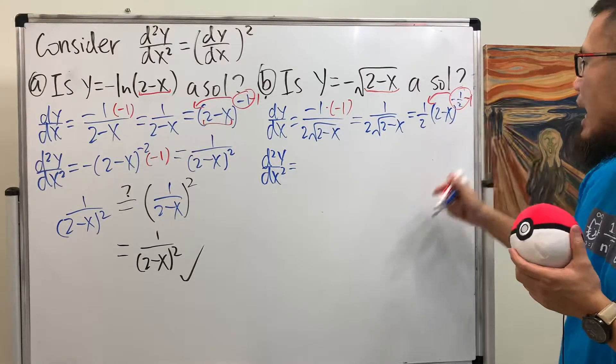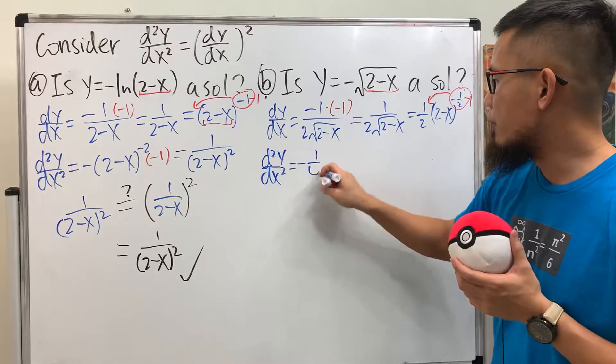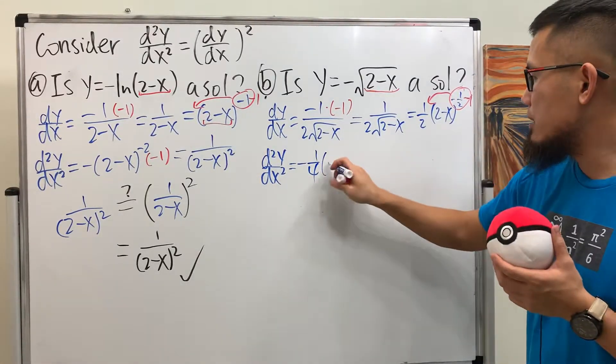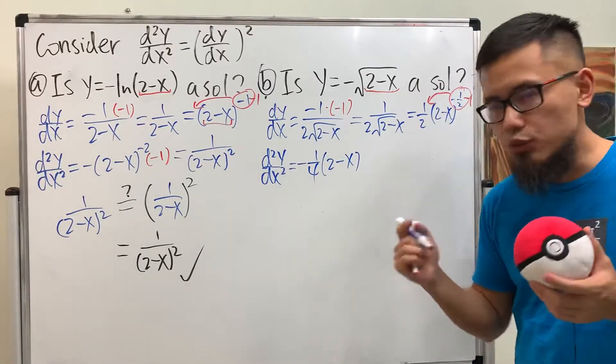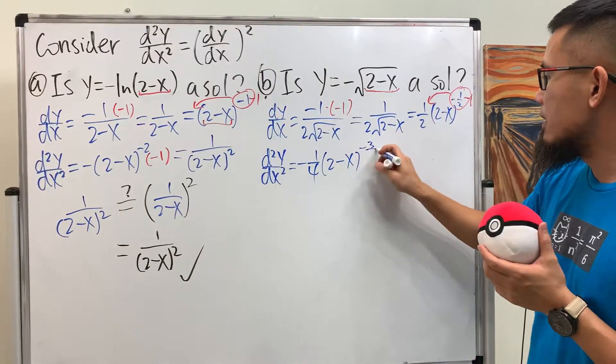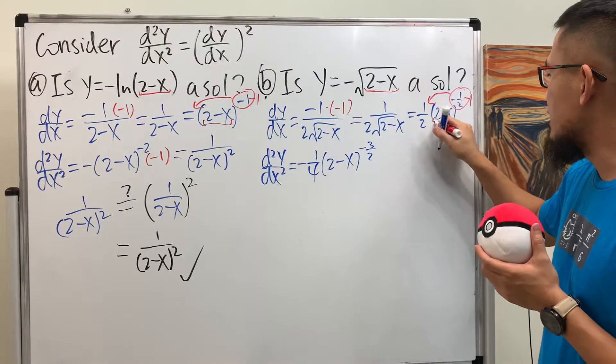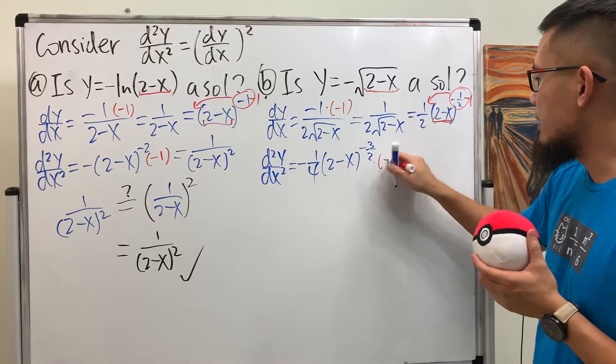Alright, d²y/dx², this will be, bring the power to the front, and then minus 1. 1/2 times negative 1/2, we get negative 1/4, and the inside stays the same. Negative 1/2 minus 1 is negative 3/2. That's nice. And then times derivative inside again, so we multiply by negative 1.